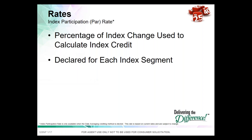An index participation rate, or par rate, is the percentage of the index change that is used to calculate the index credit. For example, if the index went up 10% and the client was in a 100% participation rate, their credit would be a positive 10% matching the index. If the index went up 10% and the client was in an 80% participation rate, the client would get 80% of that gain. The par rate is declared in advance for each segment and cannot change once the segment starts.